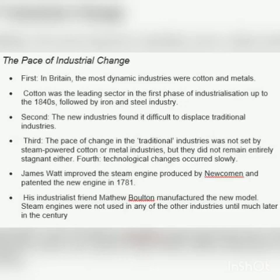First, in Britain the most dynamic industries were cotton and metals. Cotton was the leading sector in the first phase of industrialization up to the 1840s, followed by iron and steel industry. Second, the new industries found it difficult to displace traditional industries. Third, the pace of change in the traditional industries was not set by steam-powered cotton or metal industries.